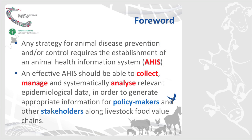How can we define the animal health information system? It's an organized system able to collect, manage, and analyze the relevant and significant technological data to support policy, the decision-making process, and to disseminate information to all the stakeholders involved in the food value chain.